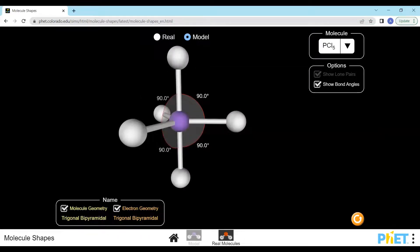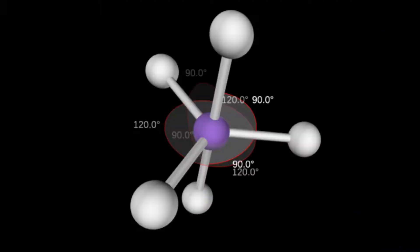A trigonal bipyramidal arrangement has bond angles of 120 degrees between the electron sets in the same plane and 90 degrees between the electron sets above and below with those in the triangle. So we can get 4 shapes from the trigonal bipyramidal arrangement. The first is trigonal bipyramidal, and this is when all 5 electron sets are bonded. As the bonded atoms are arranged symmetrically around the central atom, the dipoles will cancel out if all atoms bonded to the central atom are the same, making the molecule non-polar. However, it will be polar if there are different atoms bonded to the central atom.